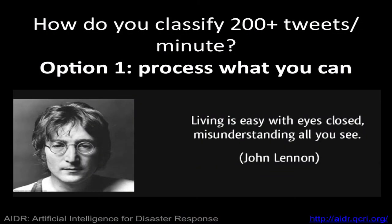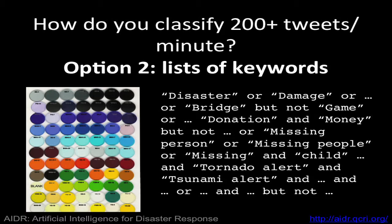If you want to classify 200 or more tweets per minute, the first thing you can do is just work with the tweets that you can handle, but this forces you to ignore a lot of tweets — it's kind of running with your eyes closed. The second option is to get some lists of keywords and decide that certain keywords will separate things into one category or another, but this doesn't scale well, and many of you have tried it and noticed it's not easy to do.